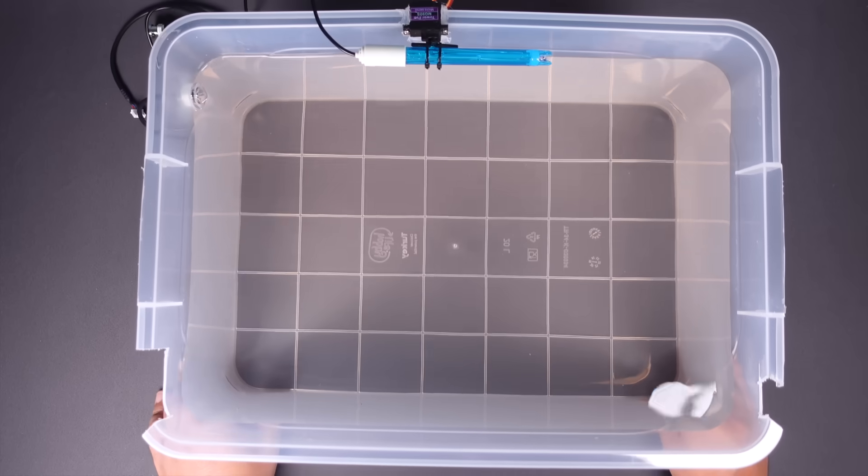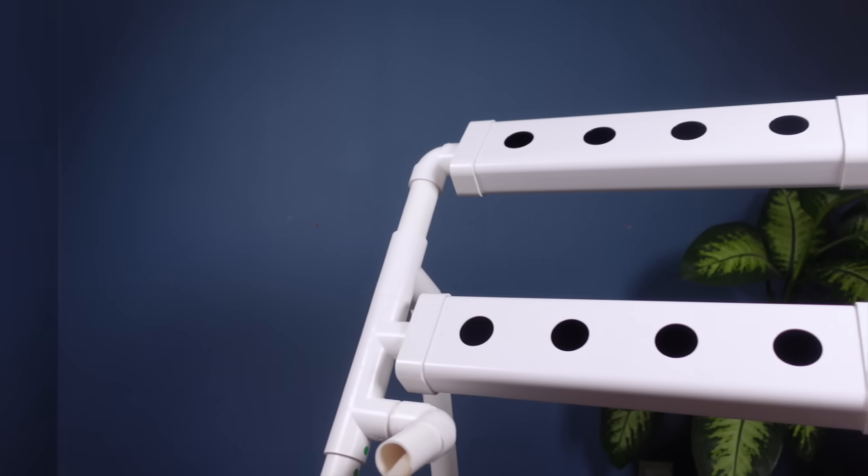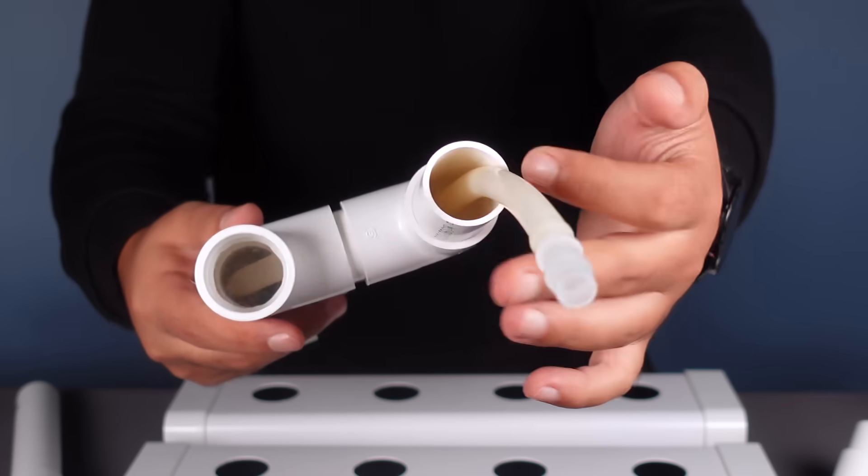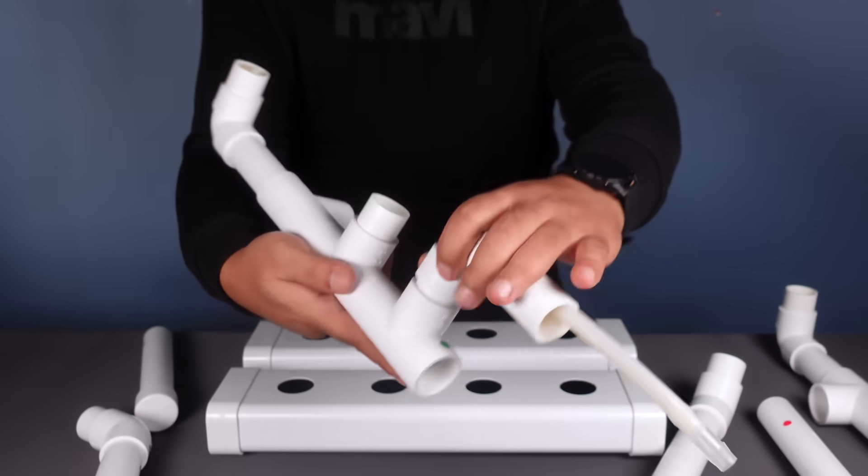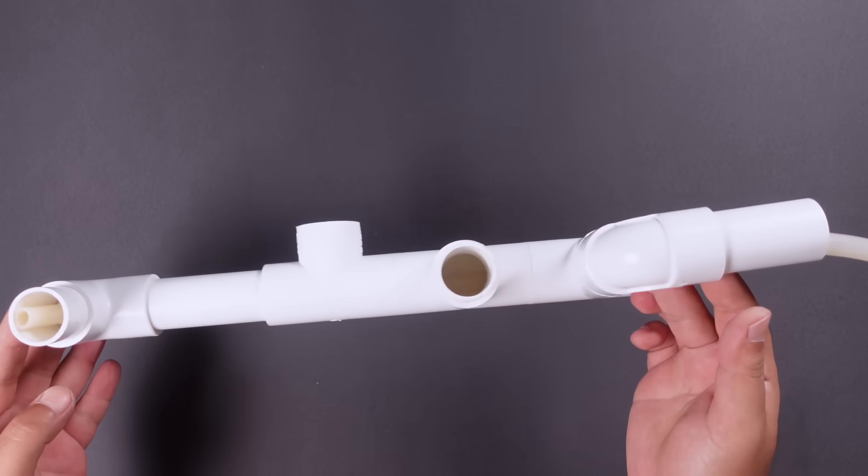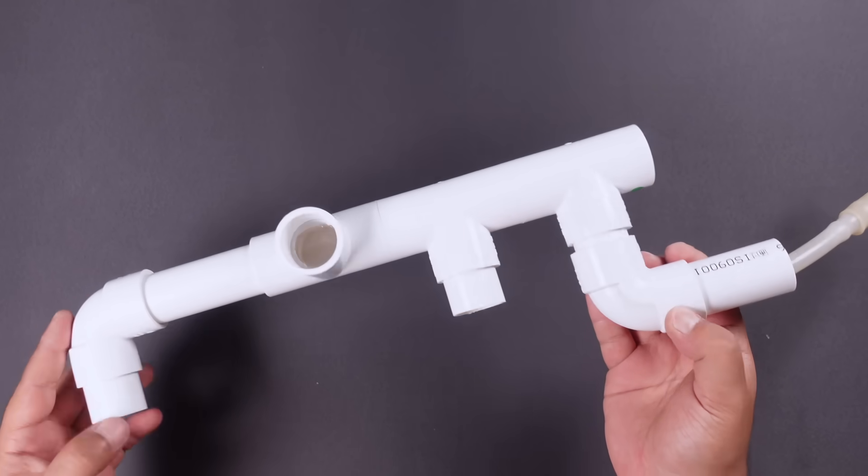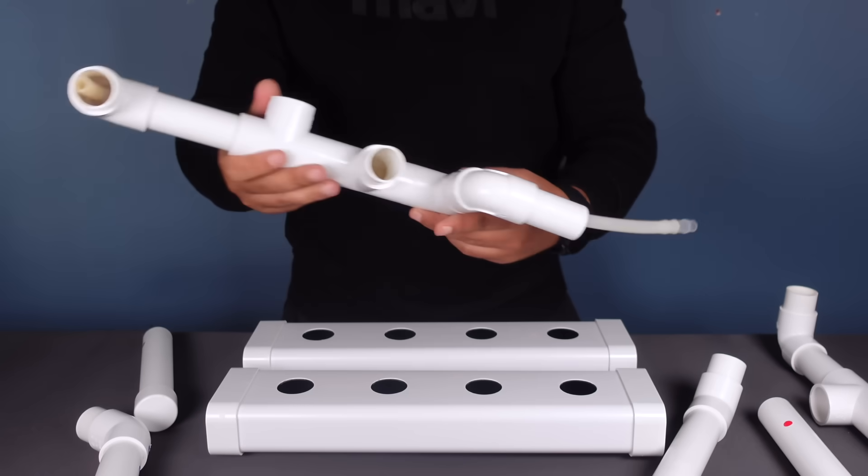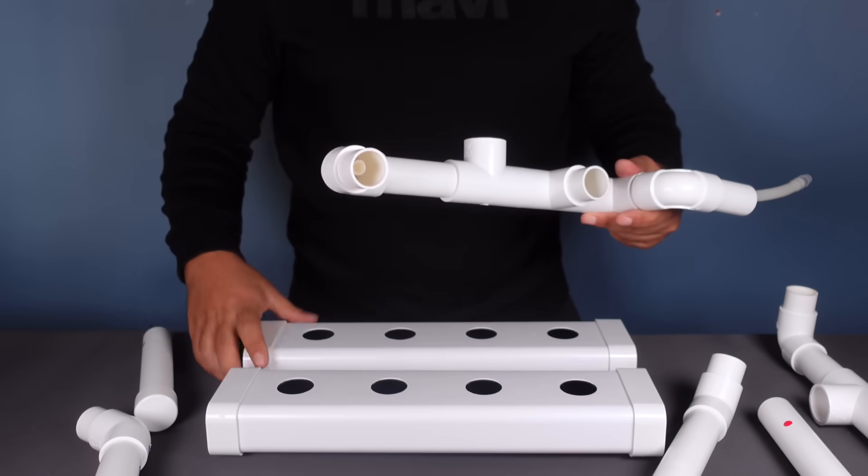For the hydroponic system, I had a ready-made set in my workshop, and I used it. The skeleton of the set consists of PVC pipes. If we talk about the working principle, first of all, the water in the tank is transferred to the top layer through the pump. The pump hose is independent from the bottom layer and the water from the tank goes directly to the top layer.